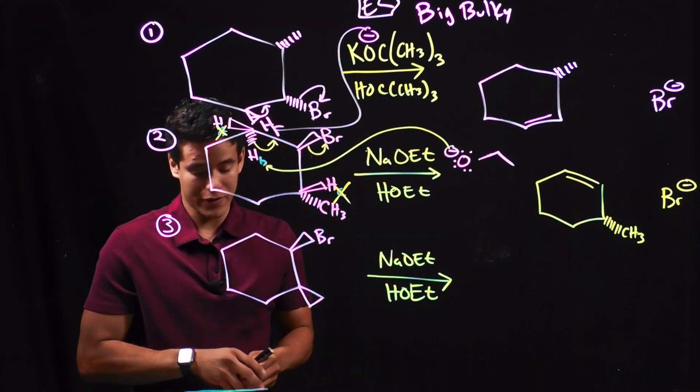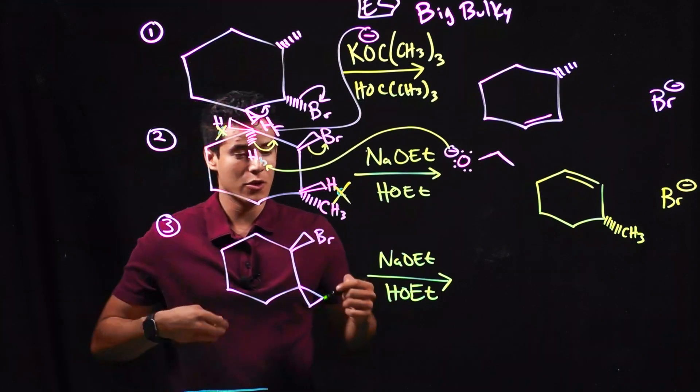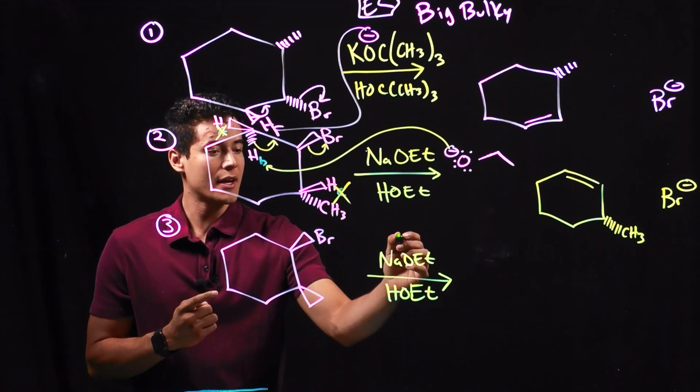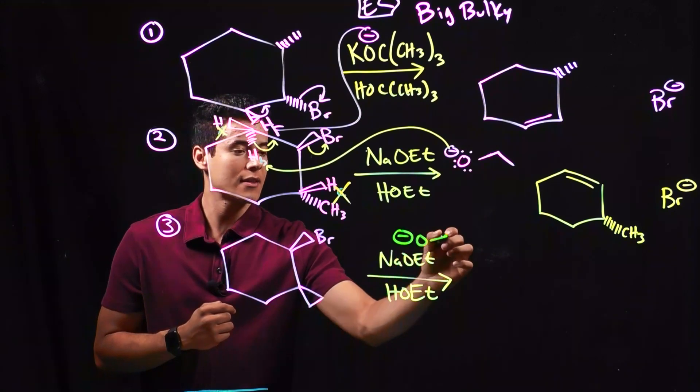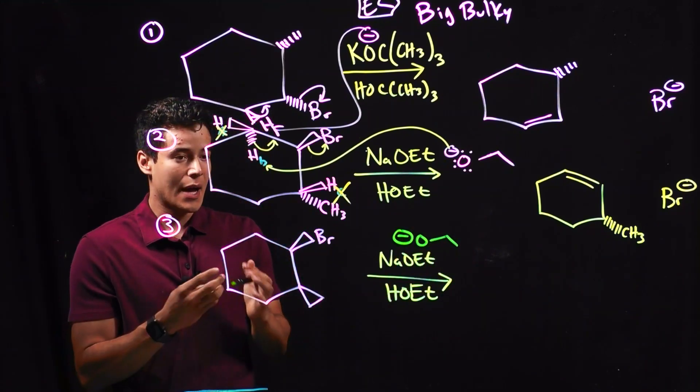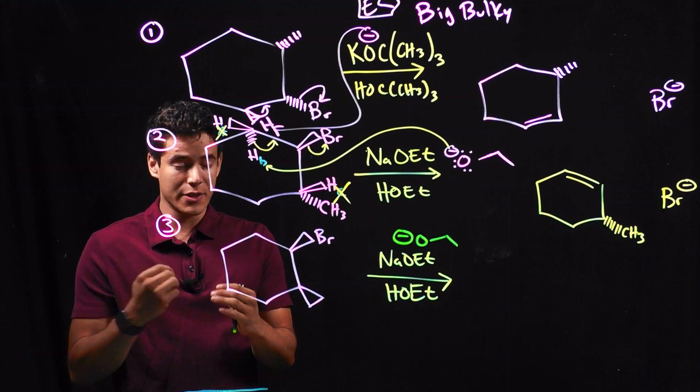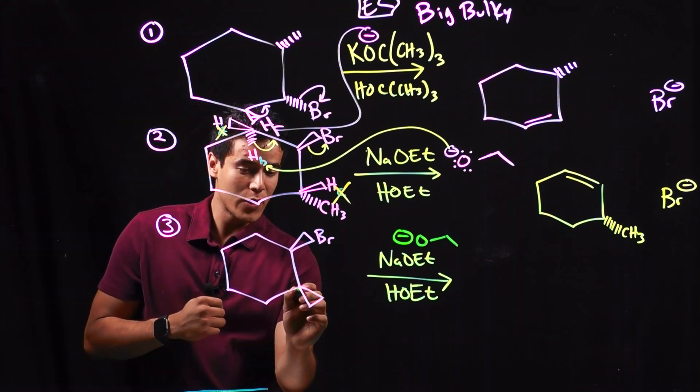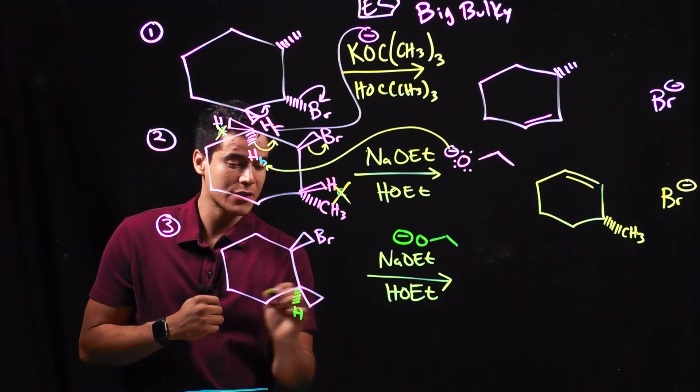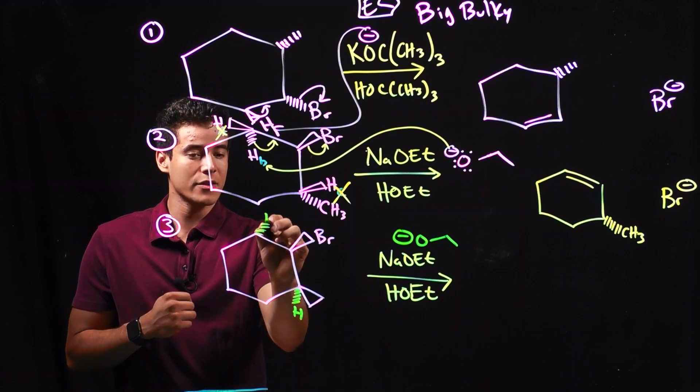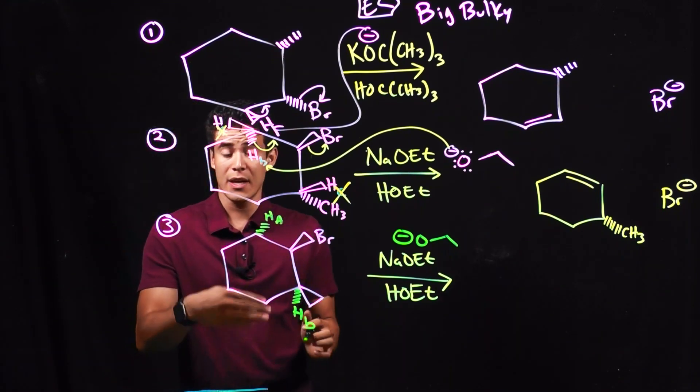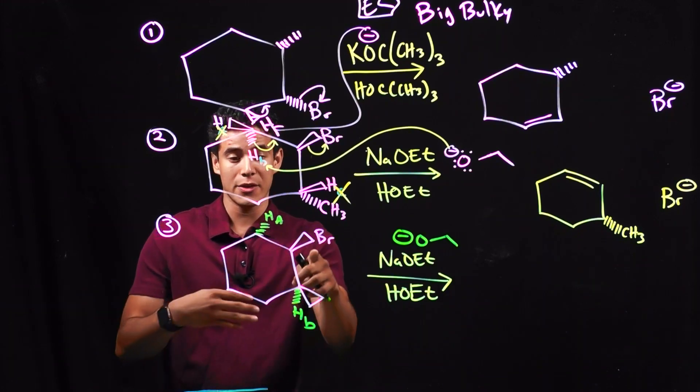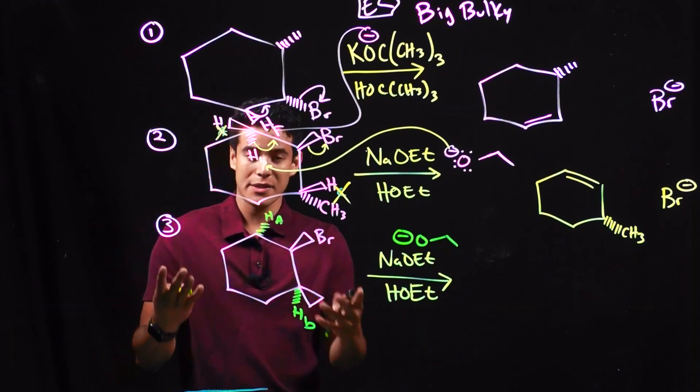Let's go ahead and finish this up with one more example. So same idea. I have my negatively charged oxygen. I'm looking for an anti-periplanar hydrogen. So I see right here, I have an H, and I also have one right here. So how do I know if I'm going to go for HA or HB? Because they're both anti-periplanar to the Br group.